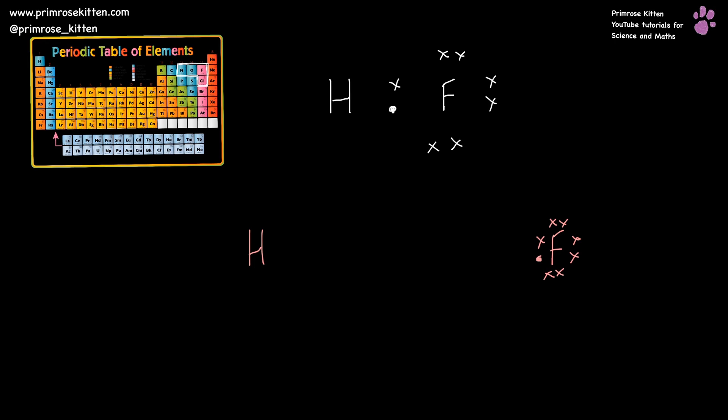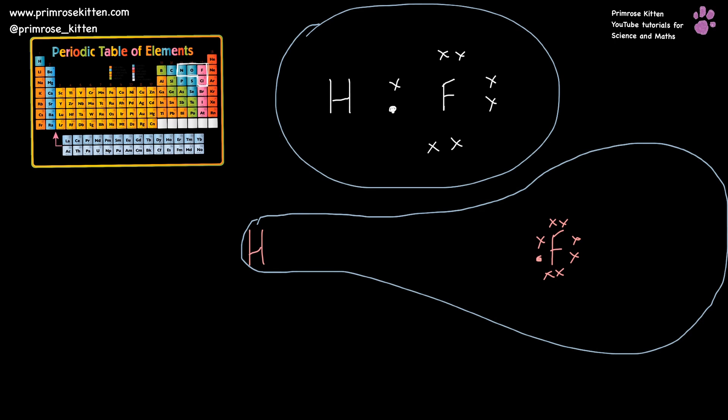So our electron cloud, instead of being a nice, even shape, equally around the hydrogen and the fluorine, is gonna be very negative, very small around the hydrogen, and then massive around the fluorine. Because that is where the electron's gonna spend the majority of the time. And this leads to a dipole being set up, where this end is negative and this end is positive.